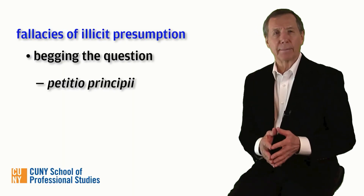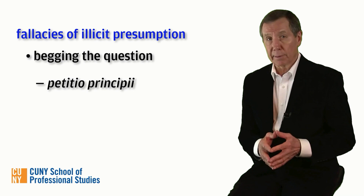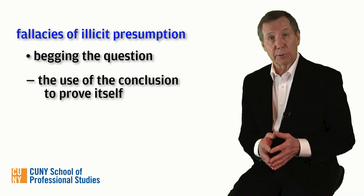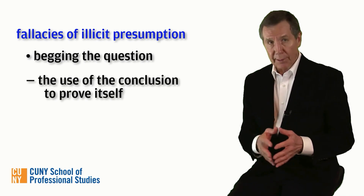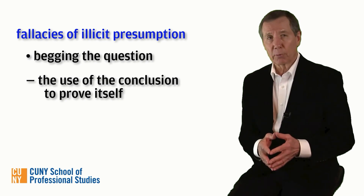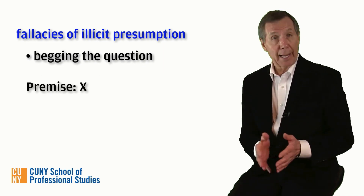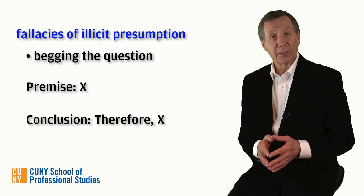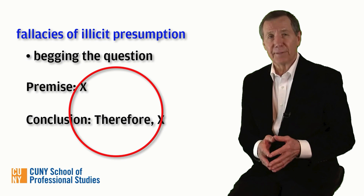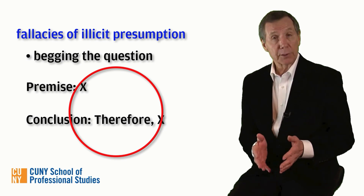Begging the question — in Latin, petitio principii — can be very simply defined. It's the use of the conclusion to prove itself, and so, visually rendered, it's clearly a case of circular reasoning. Here's the form of the fallacy: Premise X; Conclusion, therefore X. As you can see, this is a valid form, but it is viciously circular, since the conclusion follows only trivially from the premise. Thus, the argument does not prove anything that was not already known.